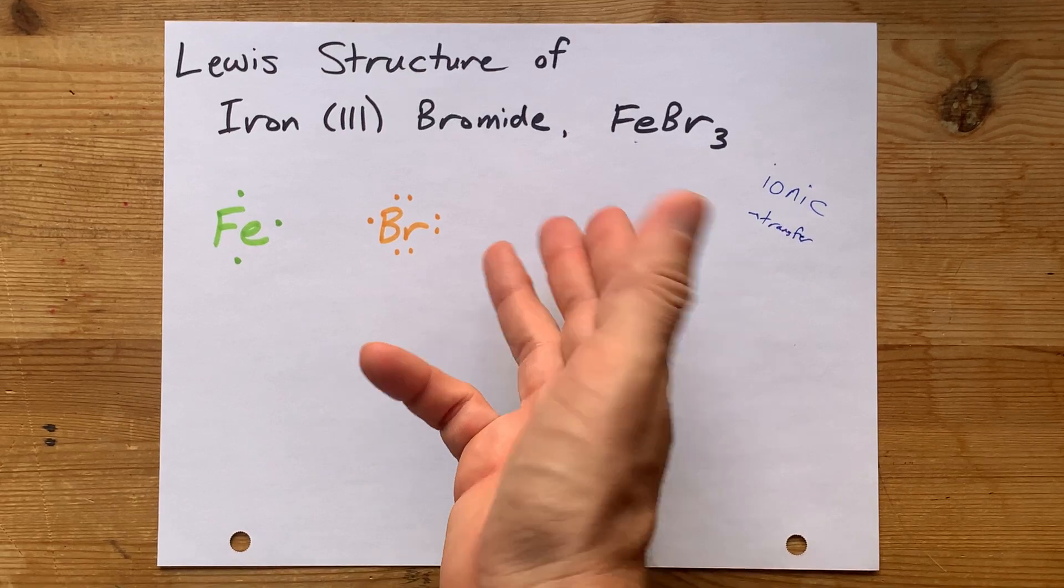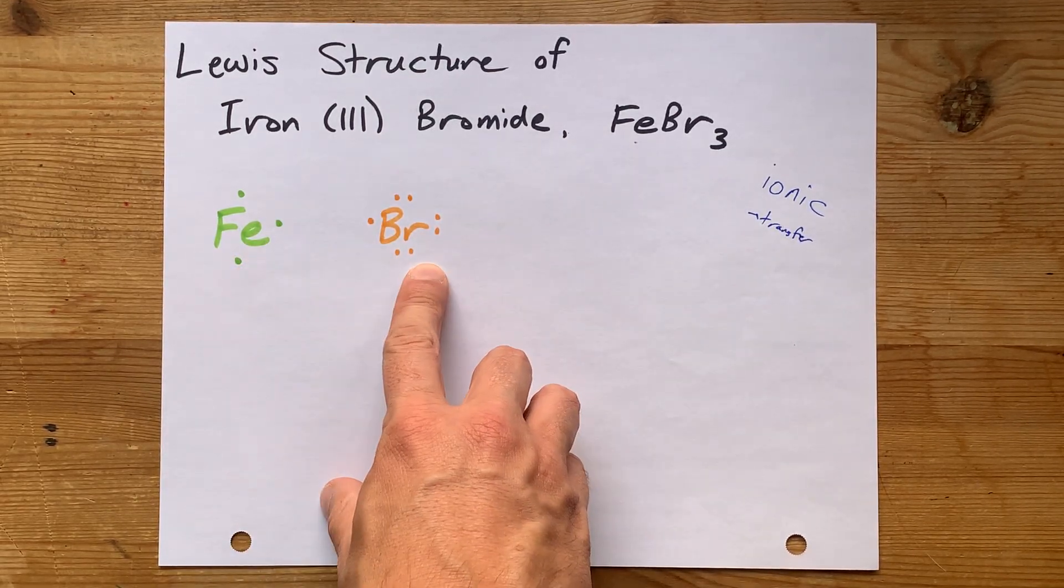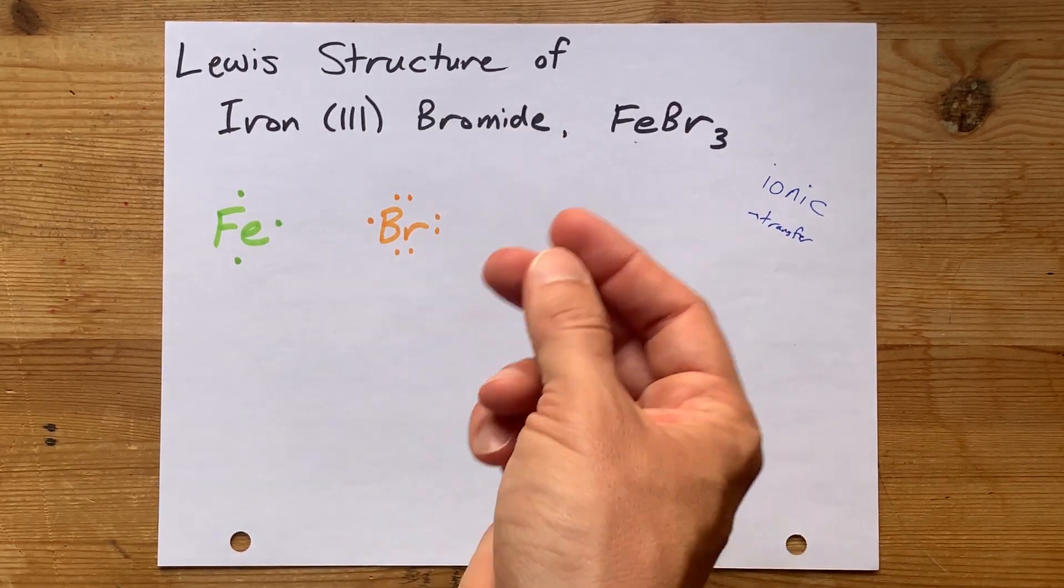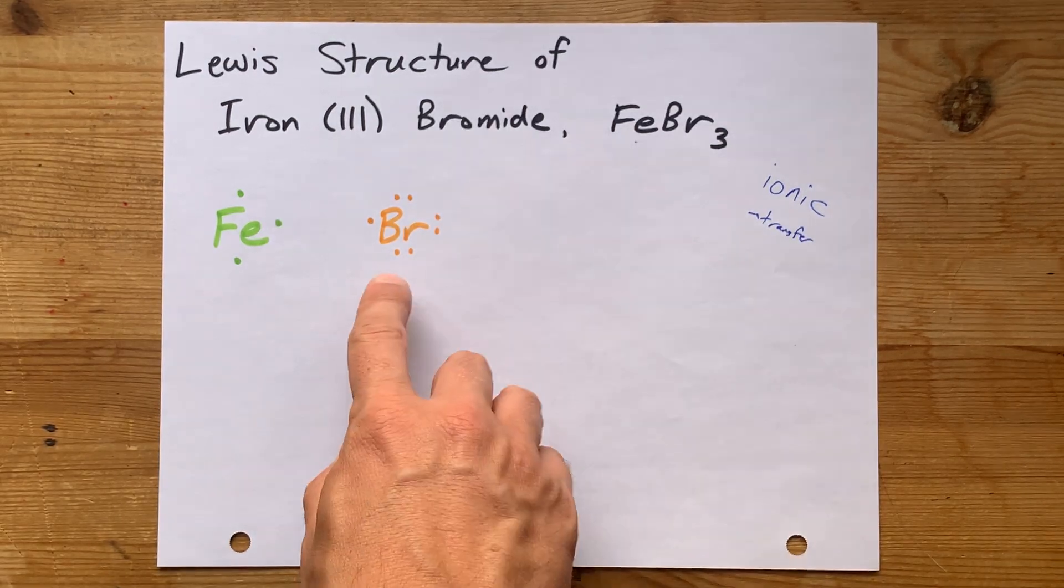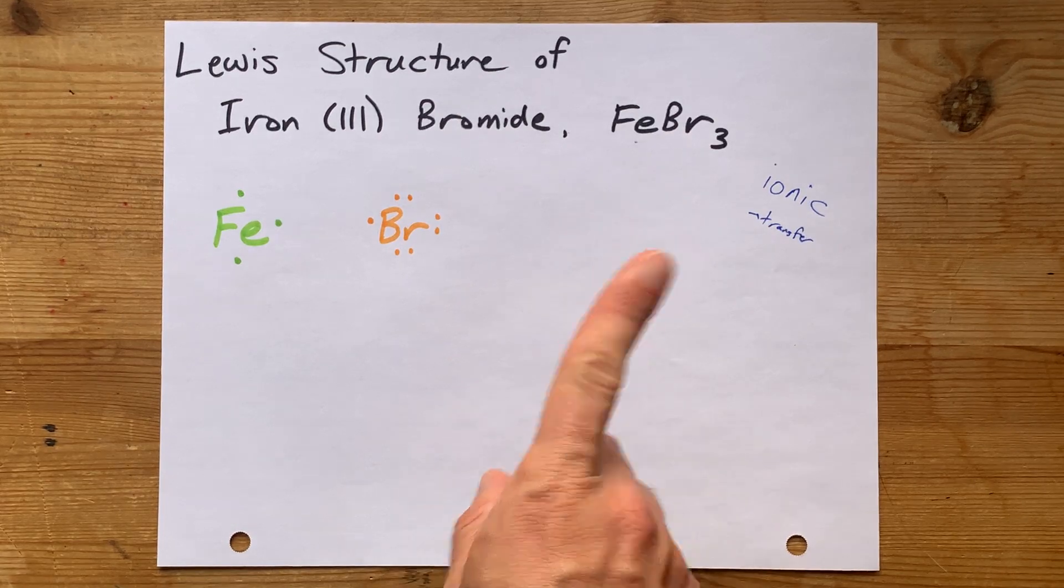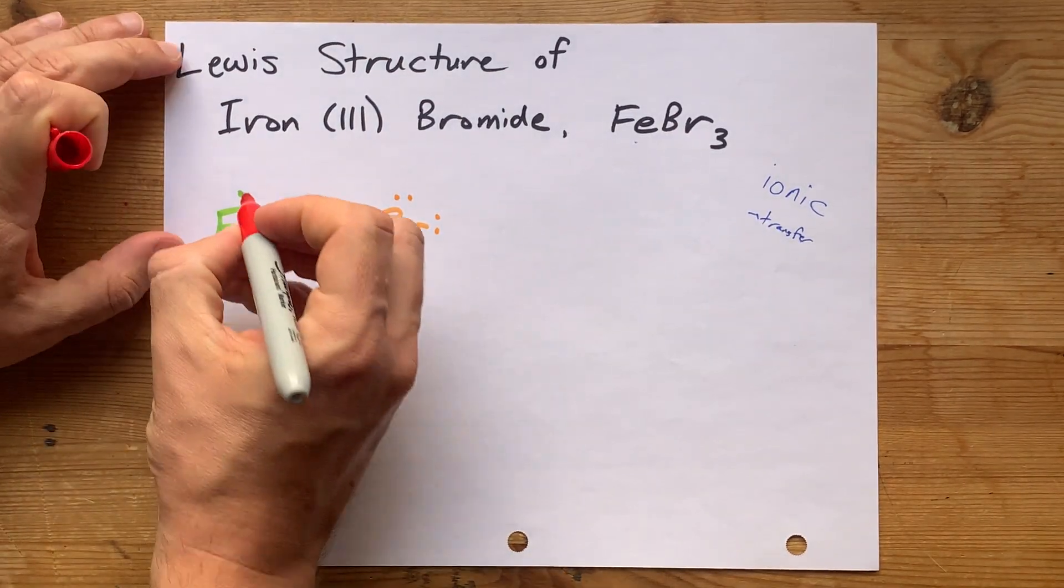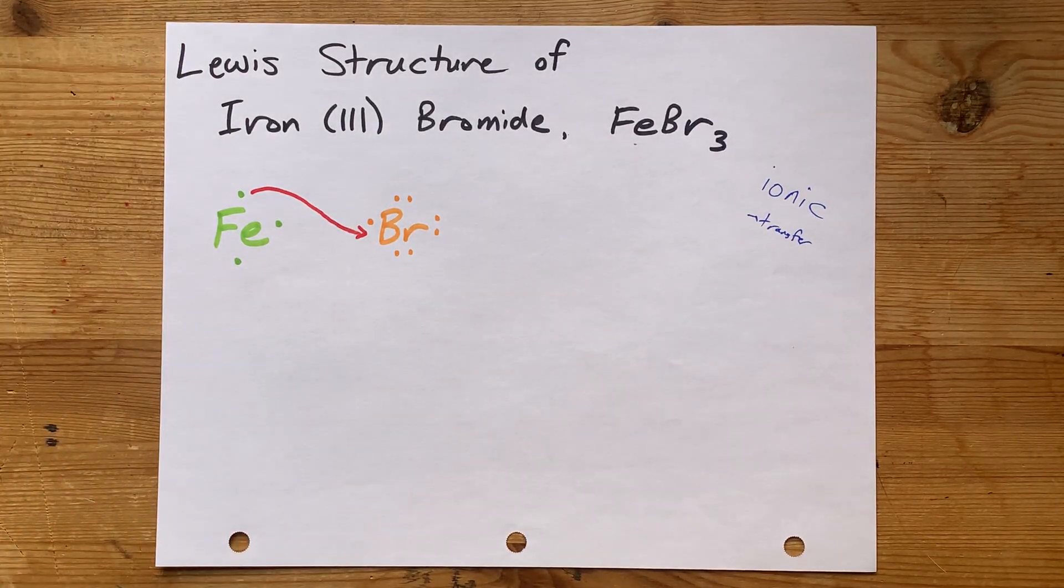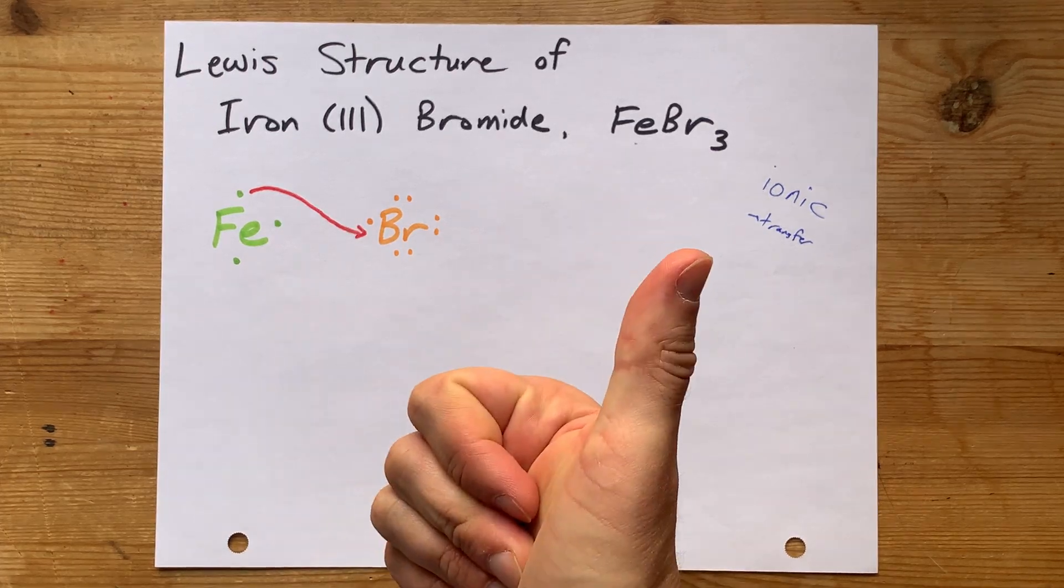The metal will want to get rid of all its valence electrons, in this case 3 of them. And the non-metal will want their octets completed. That's 8 electrons in their outer shell. Bromine here already has 7 valence electrons. It's only short by 1 to make the octet of 8. So I'm going to draw an arrow from 1 of iron's valence electrons to the Br. Now that Br will have 8, and that's happy and stable.